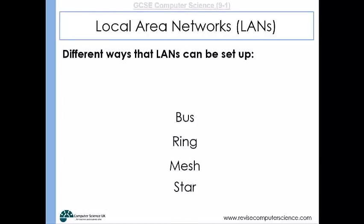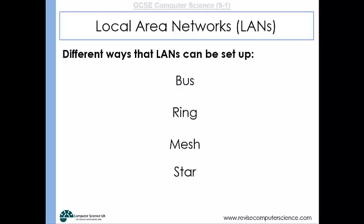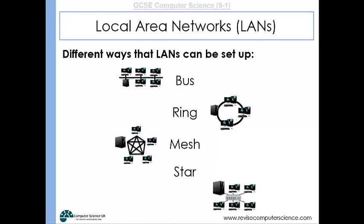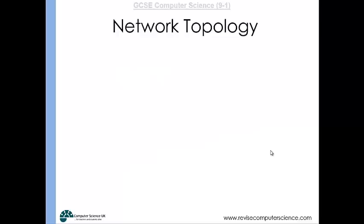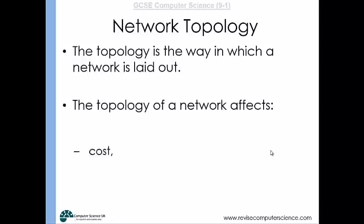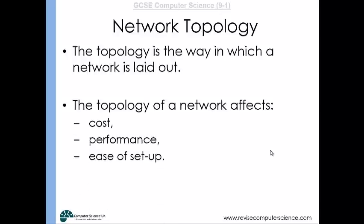There are different ways to arrange network devices, and this arrangement is called the topology. You could have a bus network, a ring network, a mesh network, or a star network. When comparing topologies, consider their cost, performance, and ease of setup.